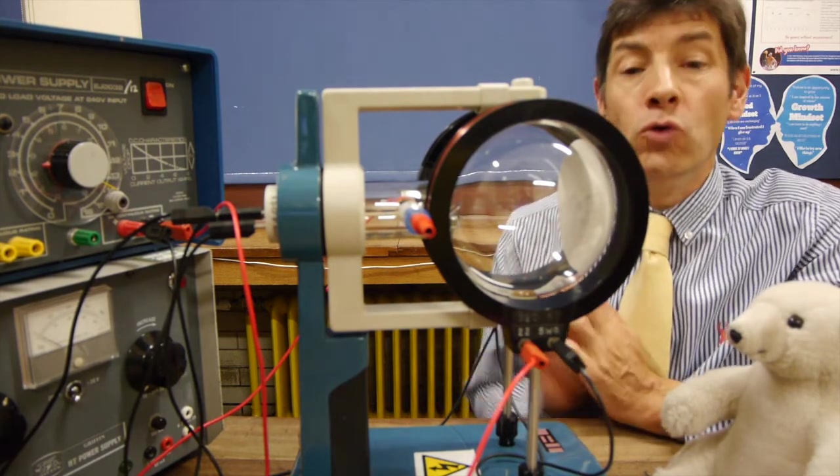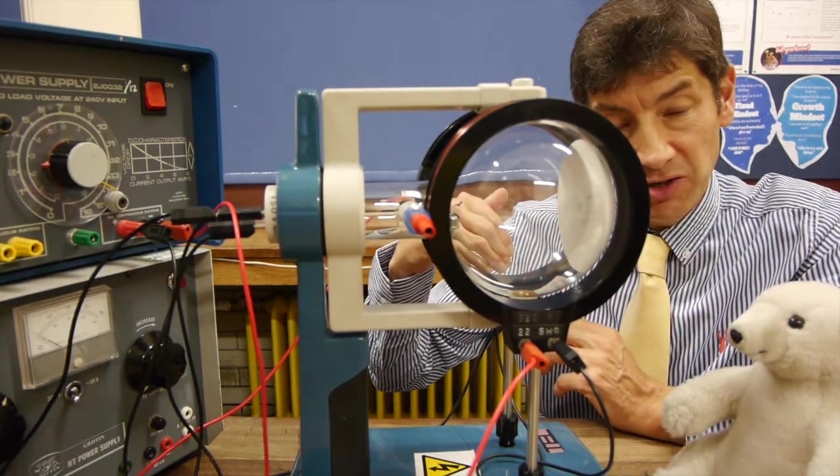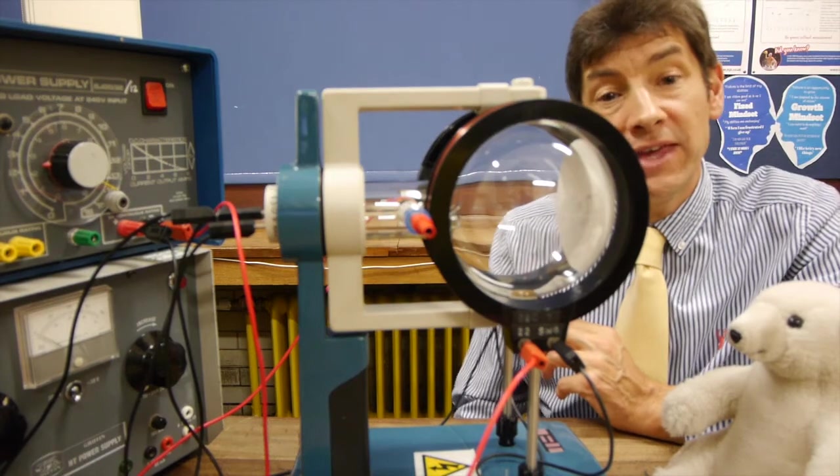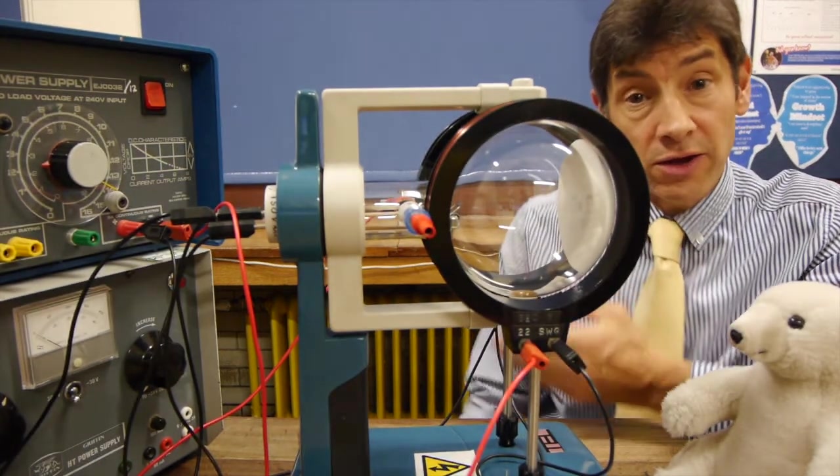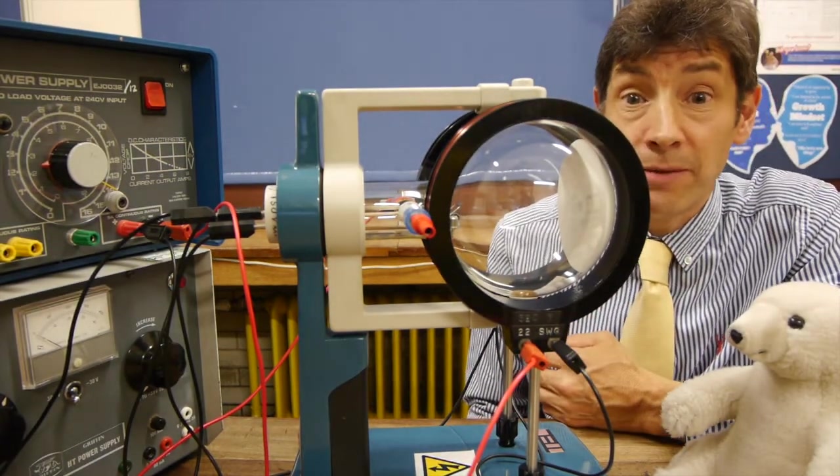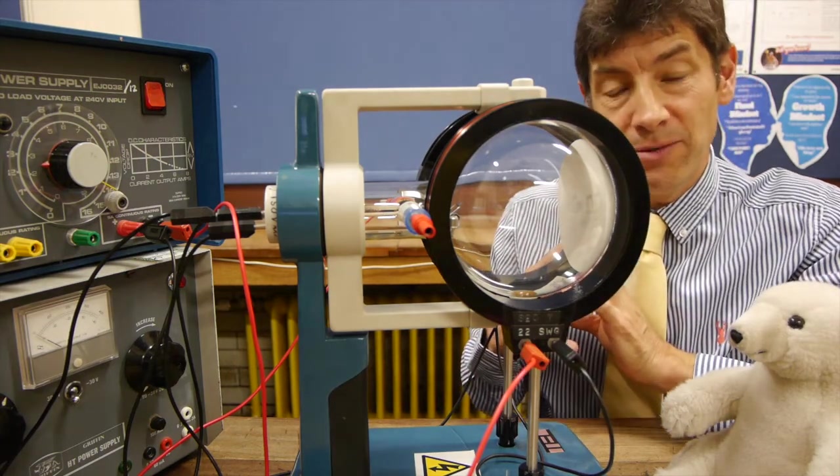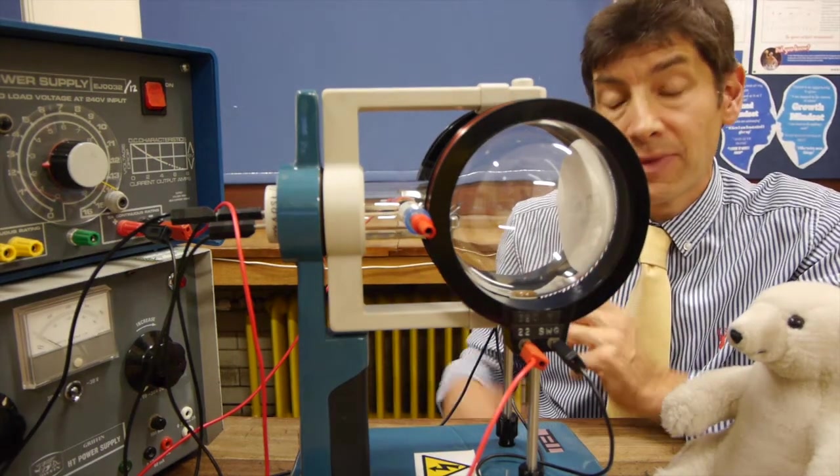And if they go faster, you're going to need a bigger force to bend them into a circle. So if we turn up the accelerating voltage, they're going faster, but we haven't turned up the magnetic field, so they will form a circle of a bigger radius.